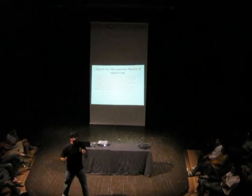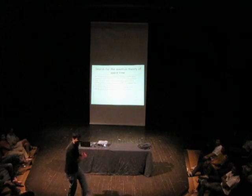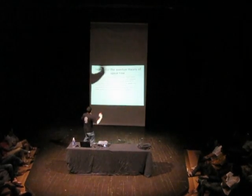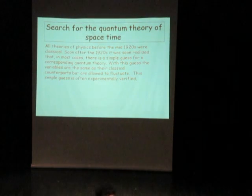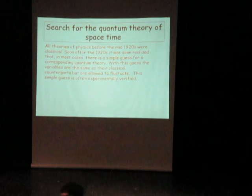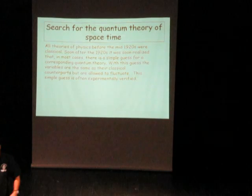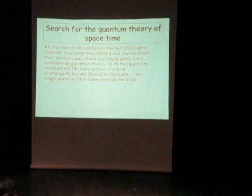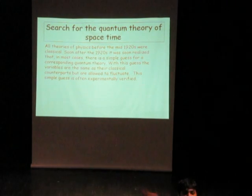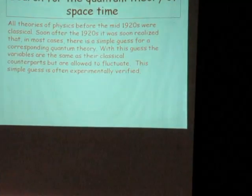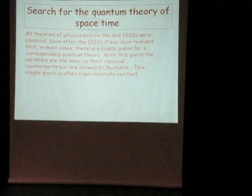Parts one and two are over. Now part three — the shortest of the three parts because we understand not so much about it. It's about the search for the quantum theory of space-time. I hope I've convinced you that we need a quantum, fluctuating theory of the geometry of space-time. What is that theory? This situation was encountered before in the history of physics.